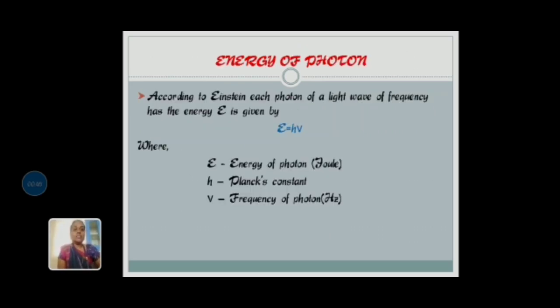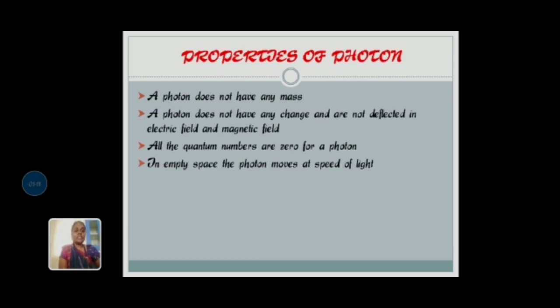Then, energy of photon. According to Einstein, each photon of light wave of frequency has energy E given by E equals h nu, where E is energy of photon with SI unit joule, h is Planck constant, and nu is frequency of photon with SI unit hertz.